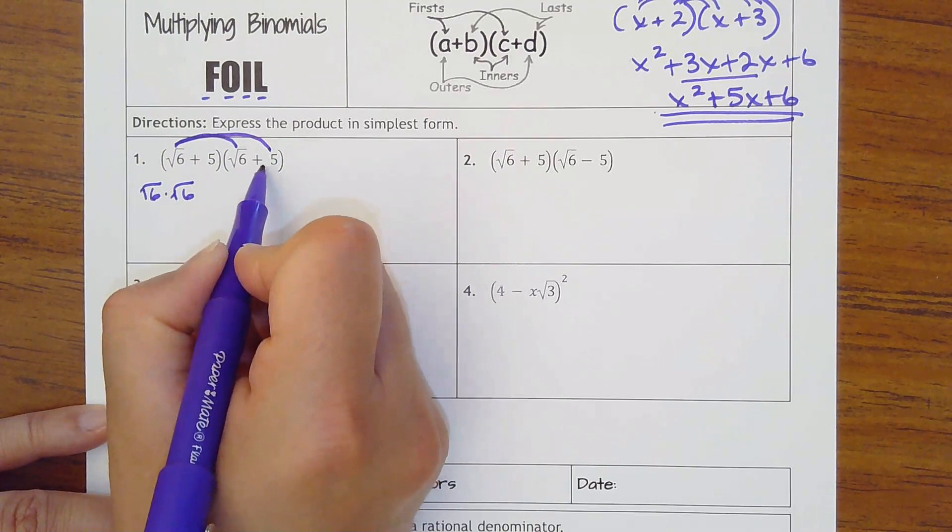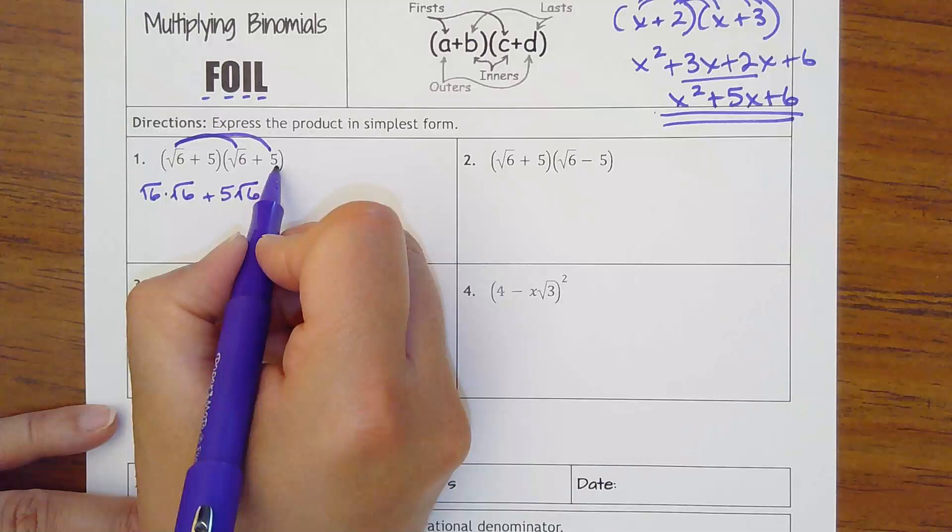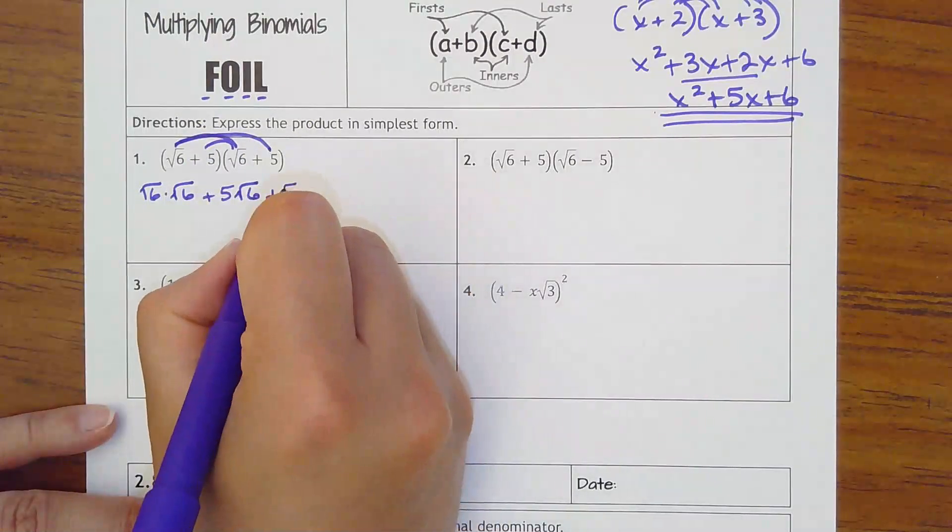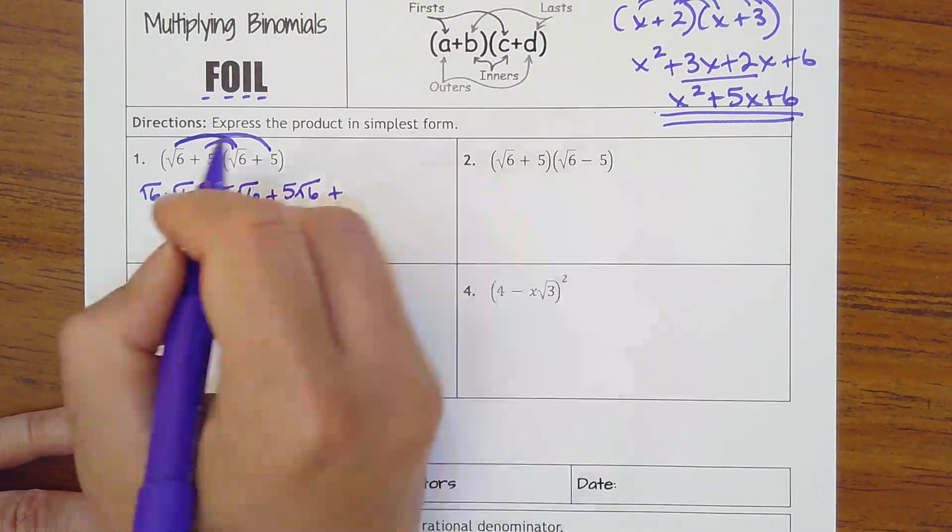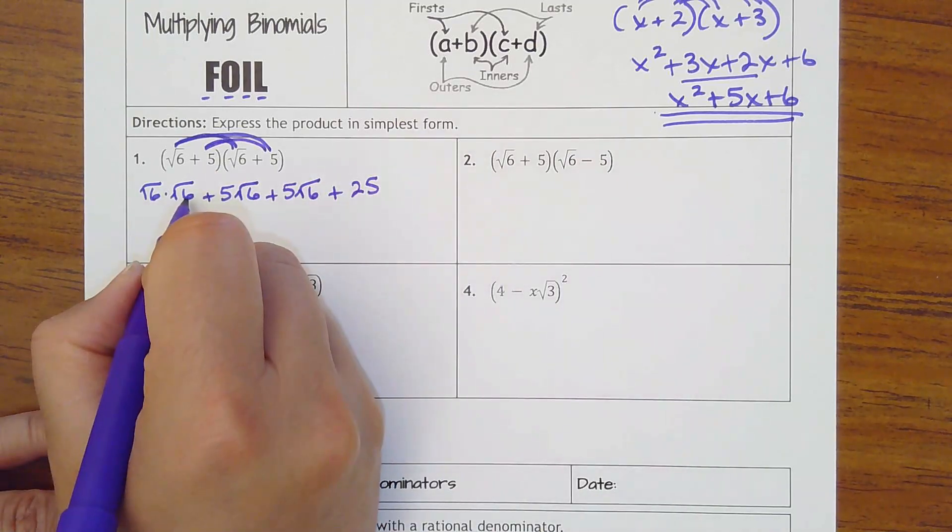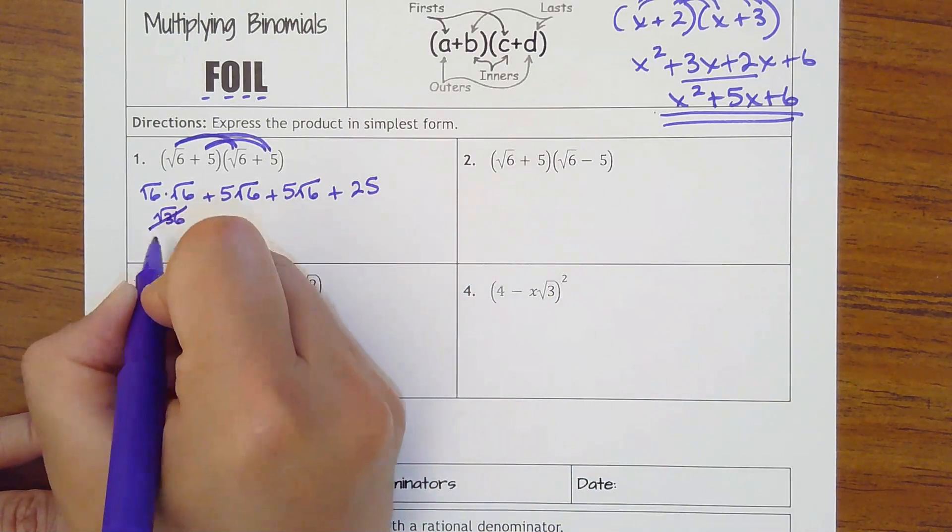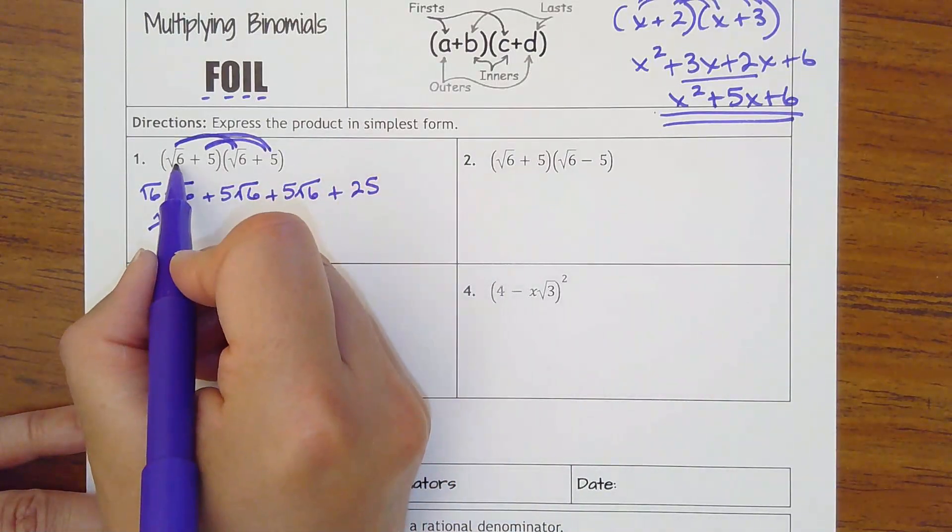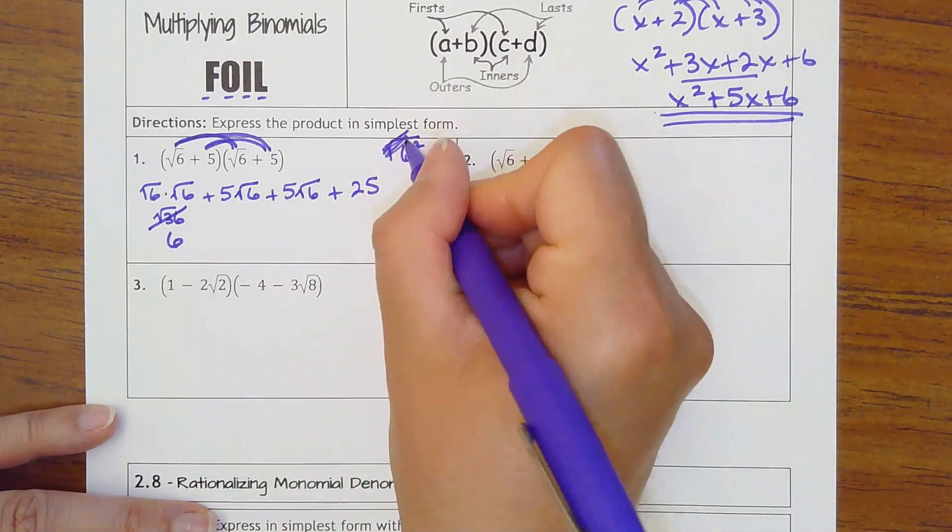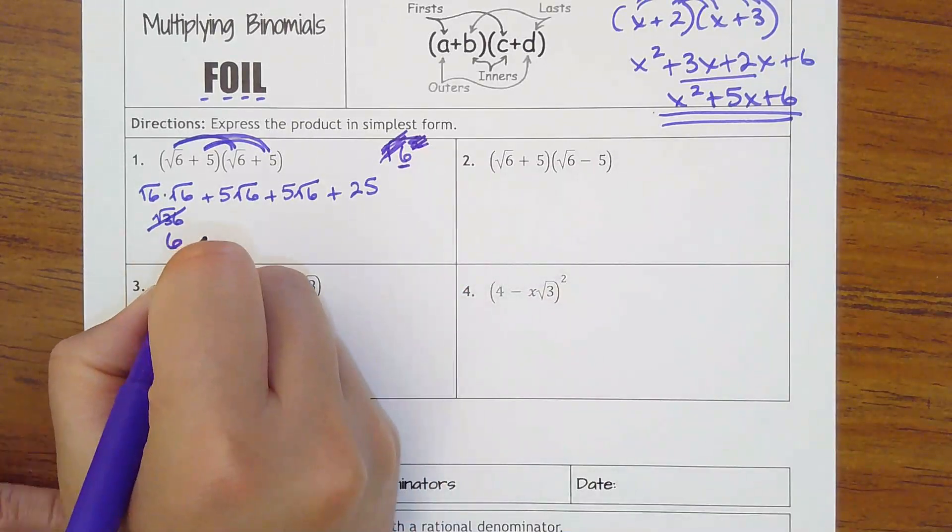And you'll be able to do that faster here after this first one. Outers, 5 times square root of 6. 5 square roots of 6. Always put the regular number in front of the radical. Another 5 times square root of 6. And then last and not least, the last 5 times 5 is 25. 6 times 6 is really the square root of 36. What is the square root of 36? 6. So anytime you have, it's almost like having that square root of 6 times 6 is square root of 6 squared. Square root and square cancel, so you're left with 6. So hopefully that can speed you up in the future.